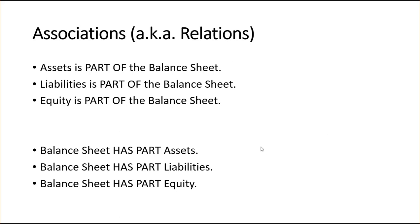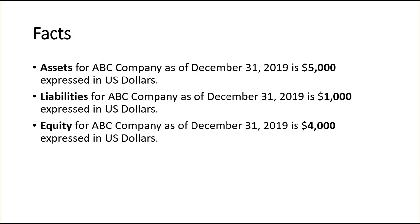An ontologist might not agree with this, but for our purposes we can assume that these are the same thing, so we only have to define it once. The facts: we're going to have a company, ABC Company. It's going to have assets as of December 31, 2019 of 5,000. Liabilities of 1,000. Equity of 4,000. So these are the pieces that you're working with. You may think this is working at a very detailed level rather than just putting it into a Word document and calling it a balance sheet, but computers are very dumb creatures and they need to be led by the hand so they can understand this stuff effectively.